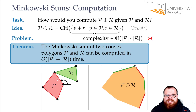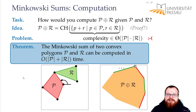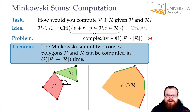And at every step we only need a constant number of operations, because we only have to compare the slope of two edges. We need one step per edge, the complexity is p plus r, so this is also the time that we take to construct it.